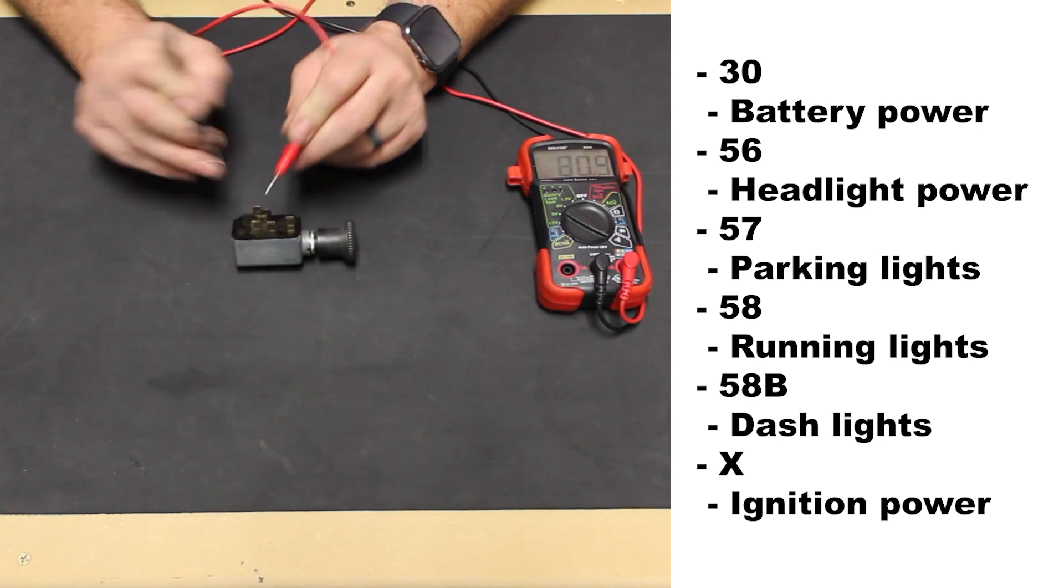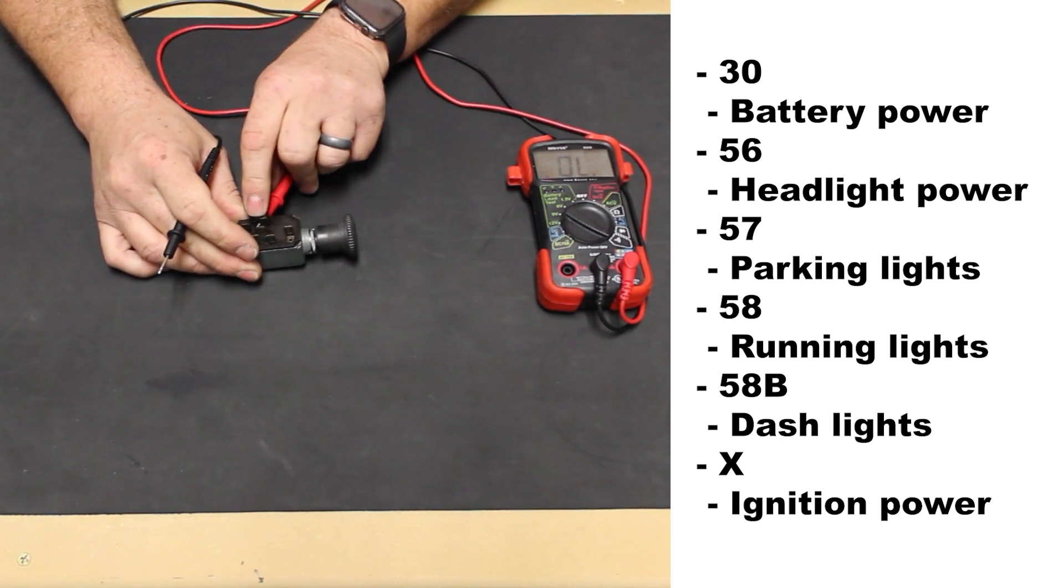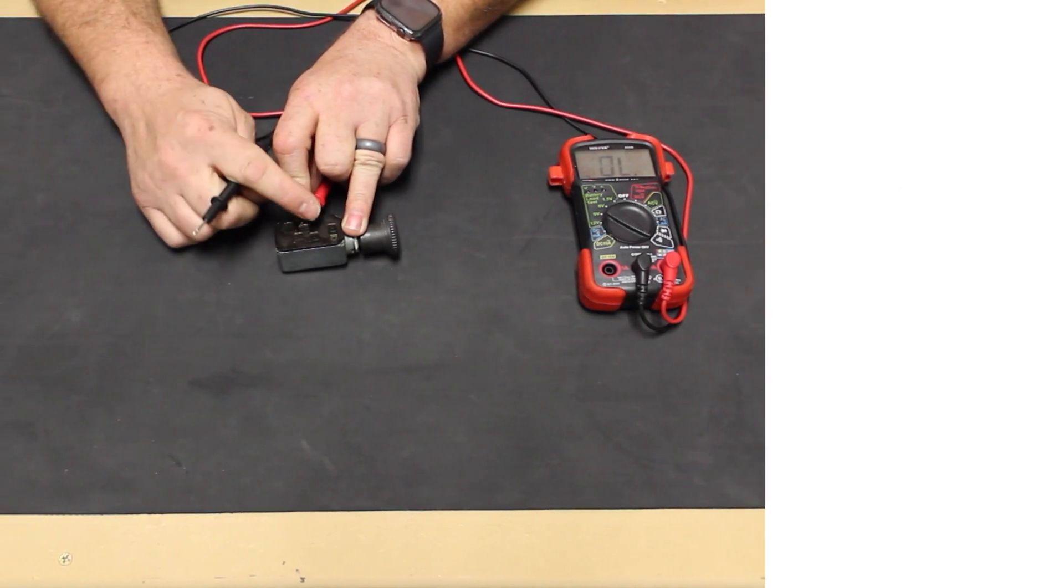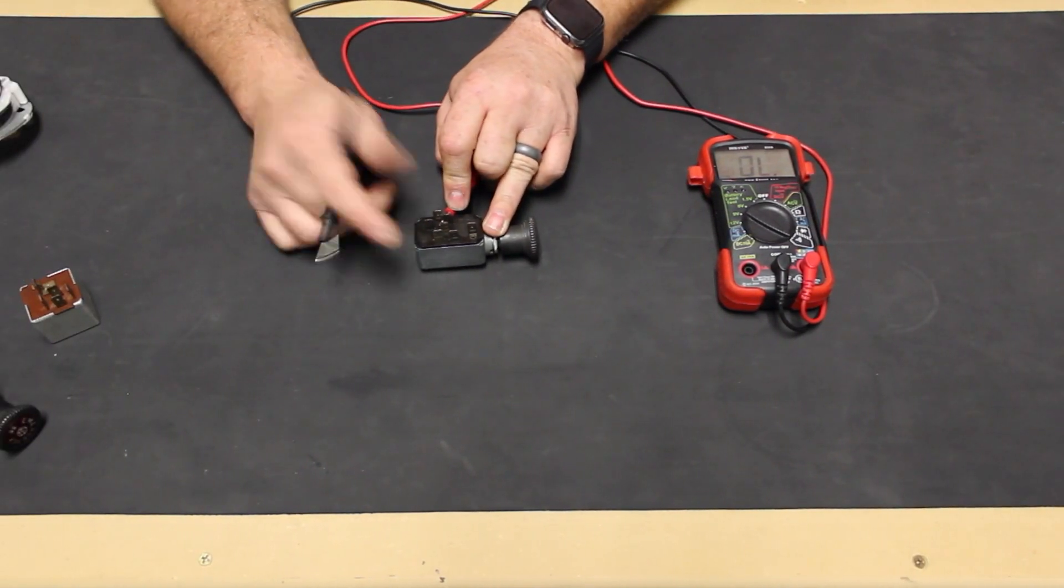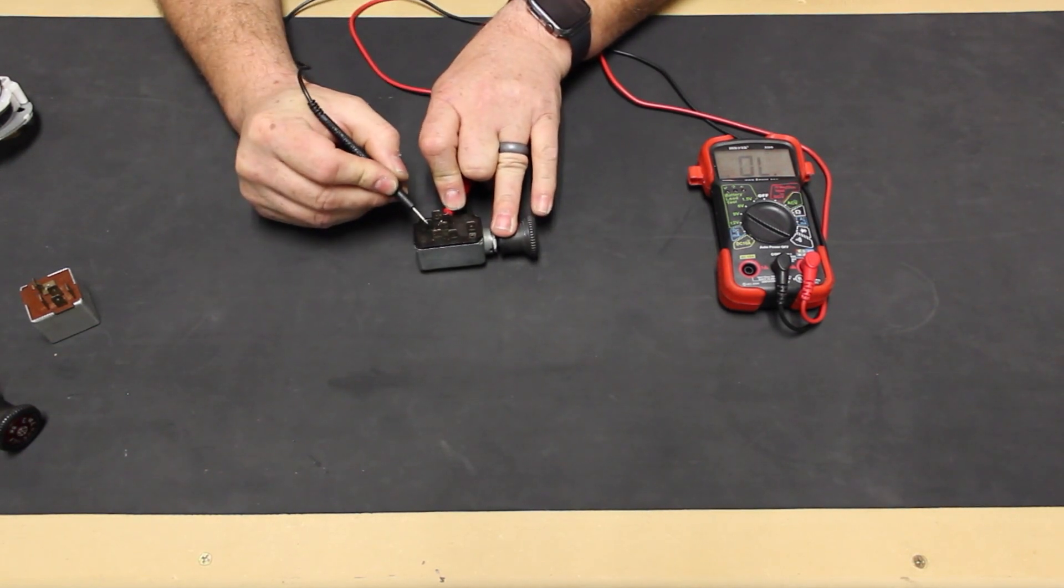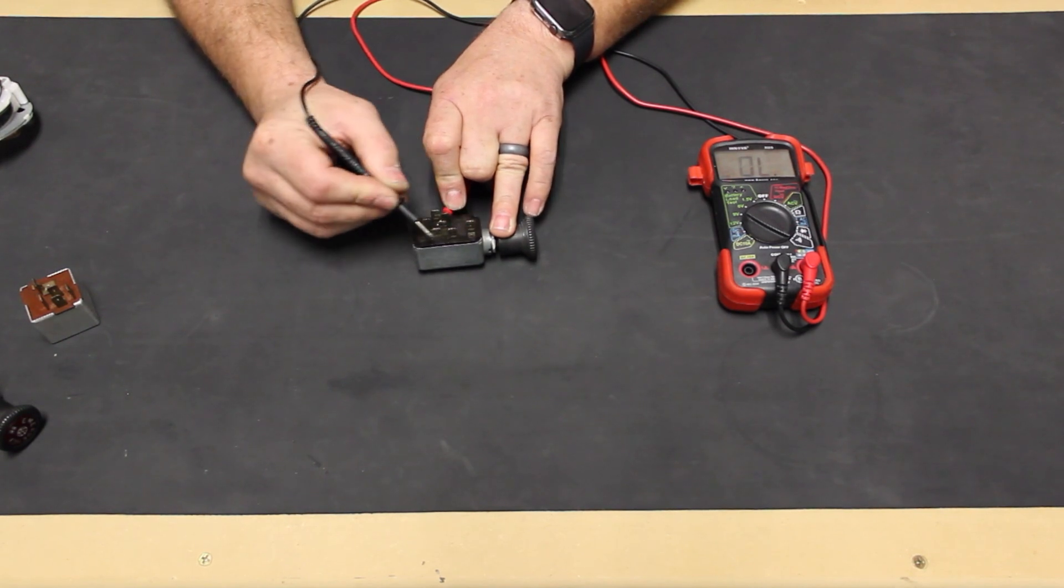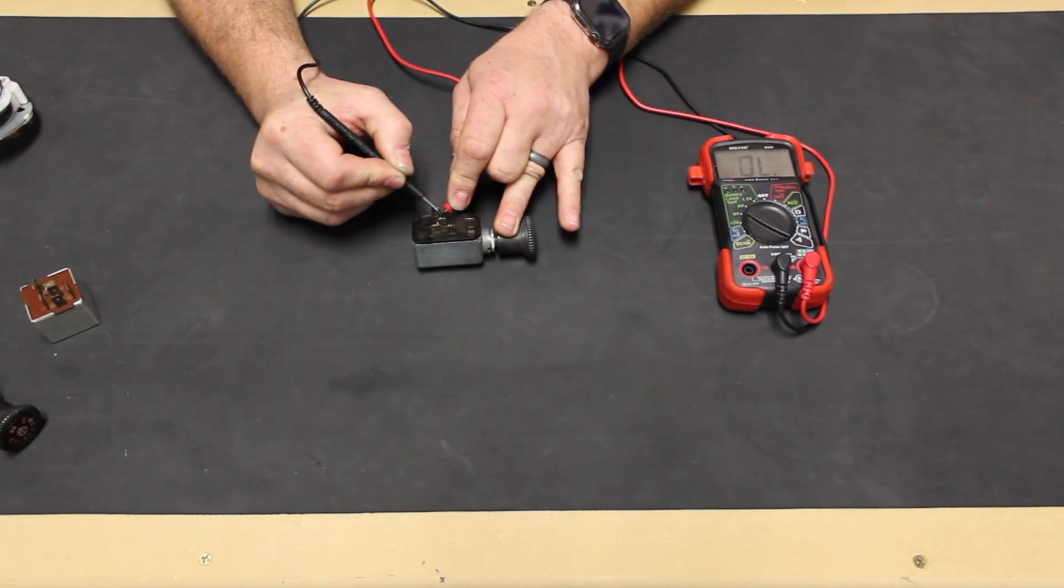30 is power from the battery and, depending on the car, from the headlight switch out to the fuse box and or the ignition switch. With our headlight switch at the off position and one lead at our 30 terminal to act as power in, there is no power out to any other terminals. We only have power at the two 30 terminals, as we should.